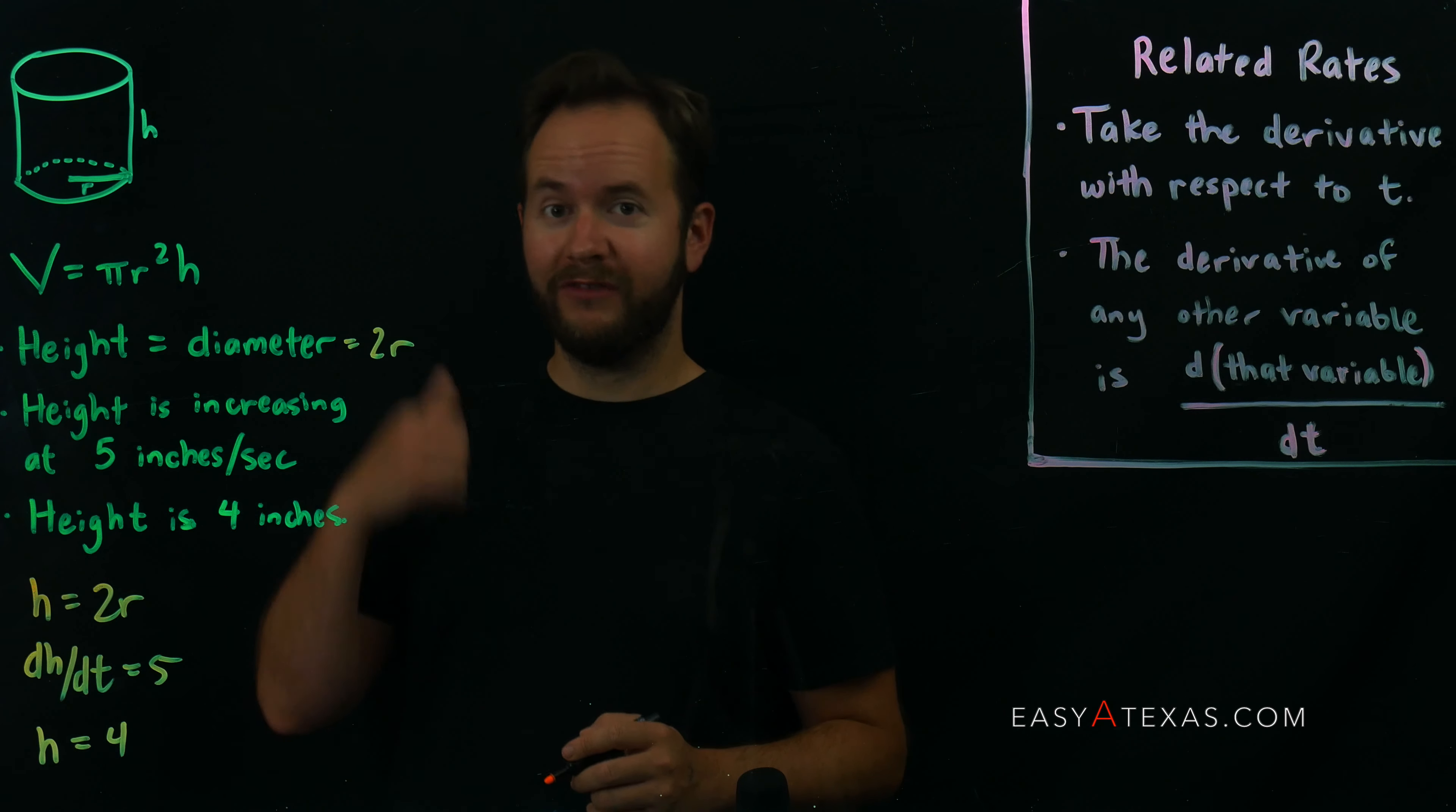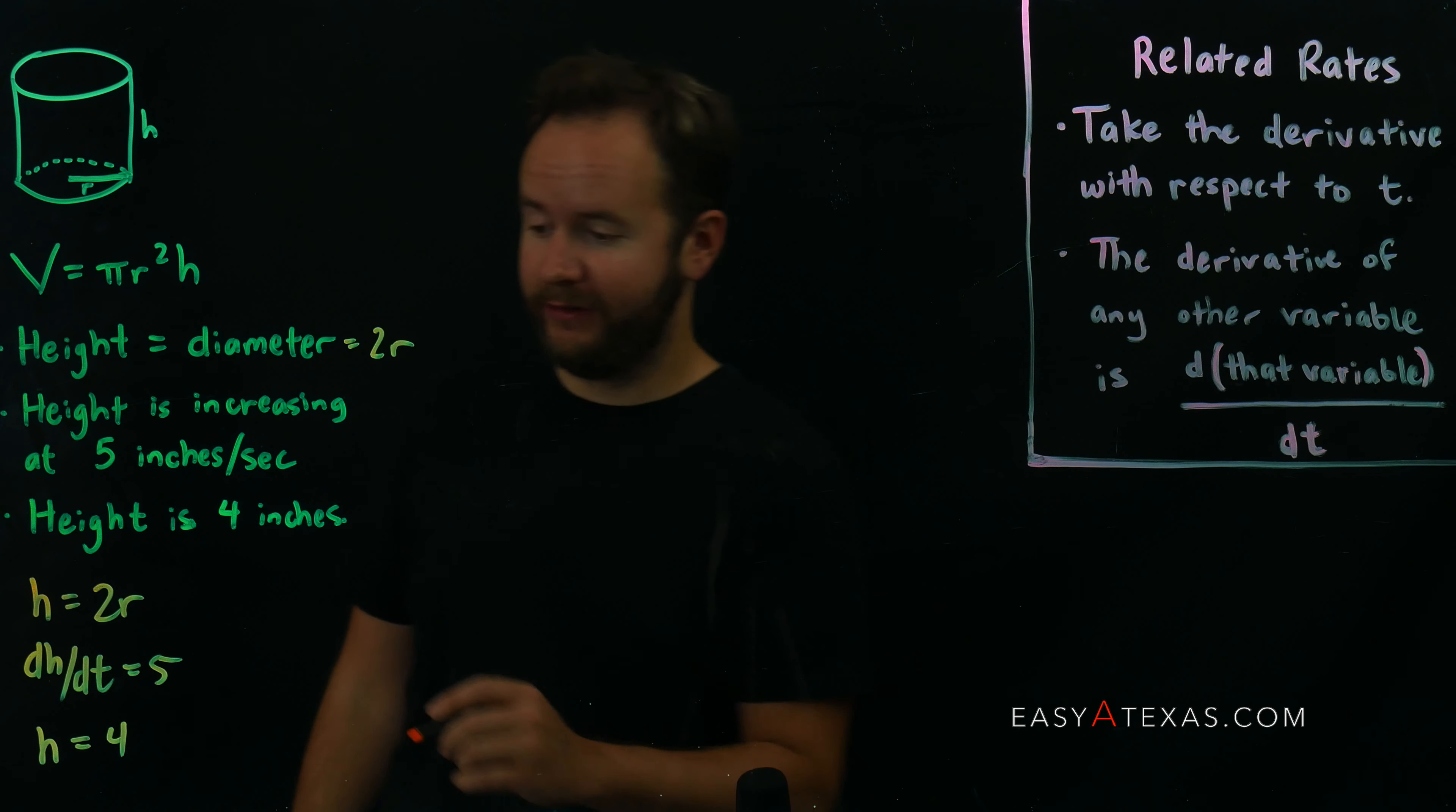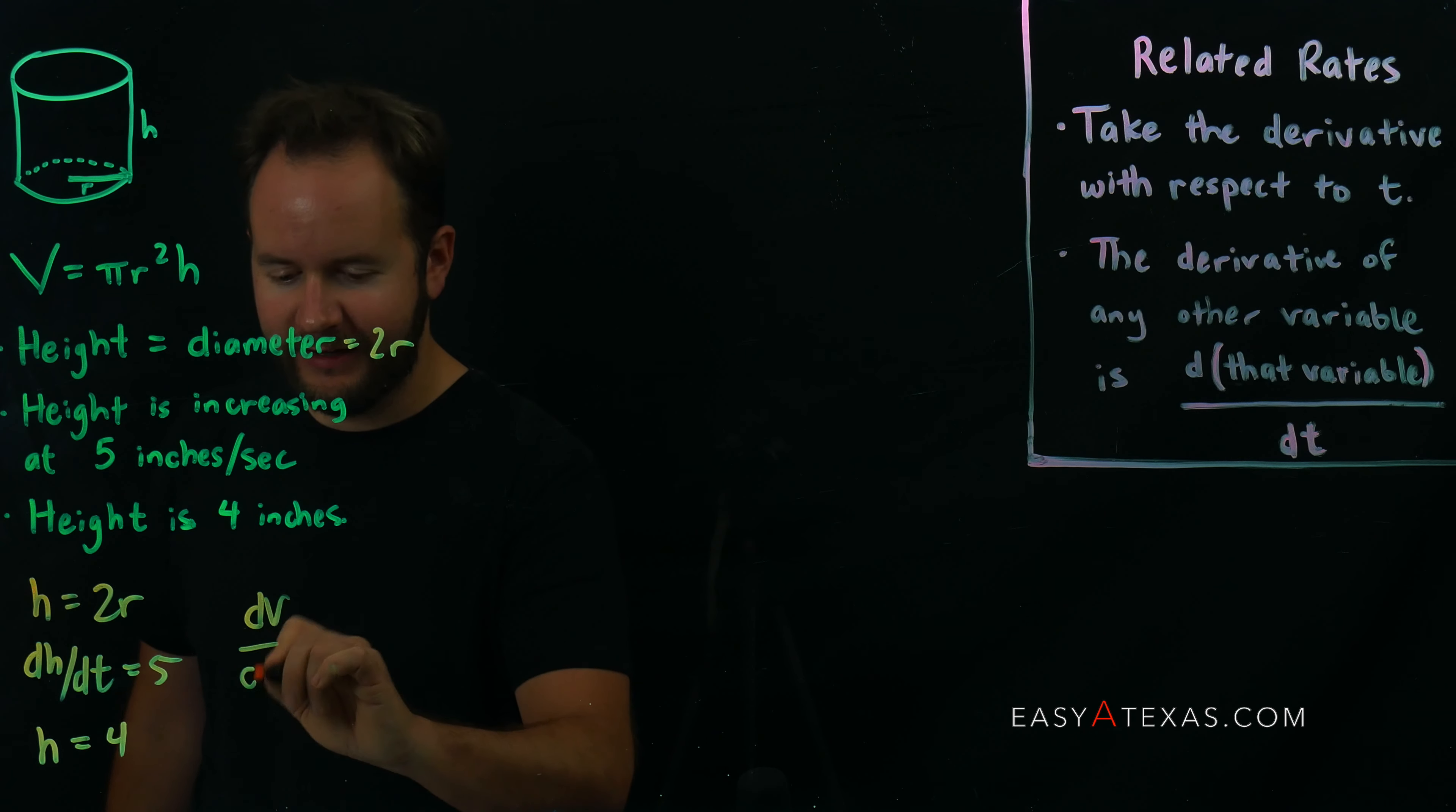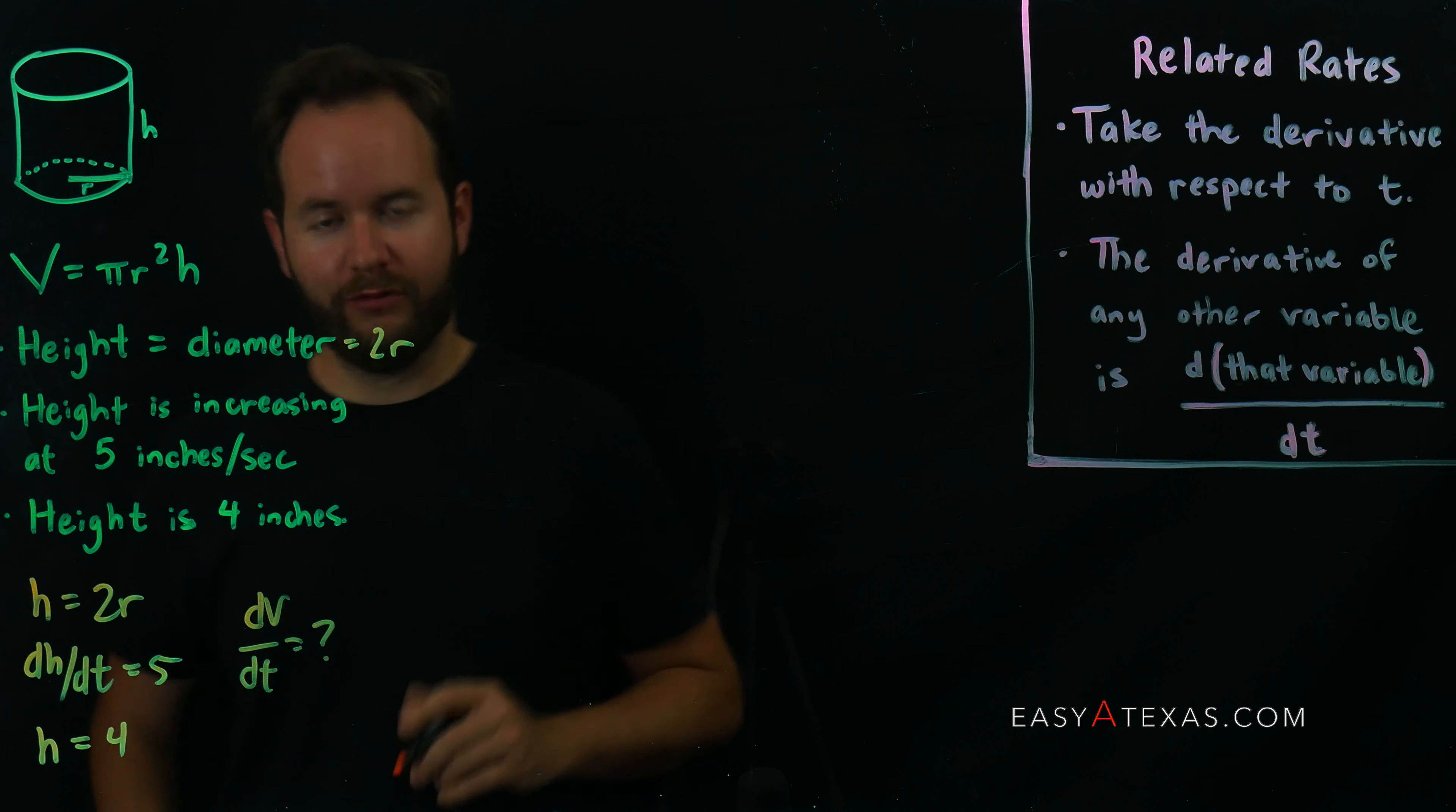What we're asked to do in this problem is figure out how fast the volume of that cylinder is changing. So we're looking for dv/dt, and we're going to say that's a question mark. We don't know what that is. That's what we're looking for.